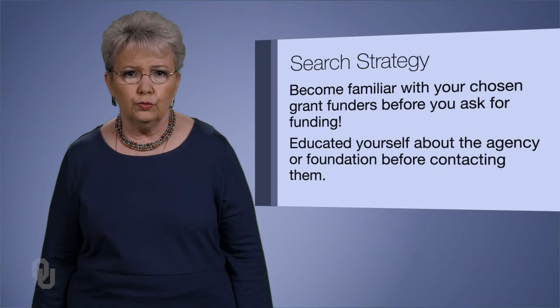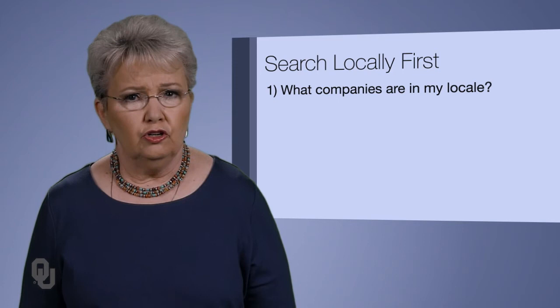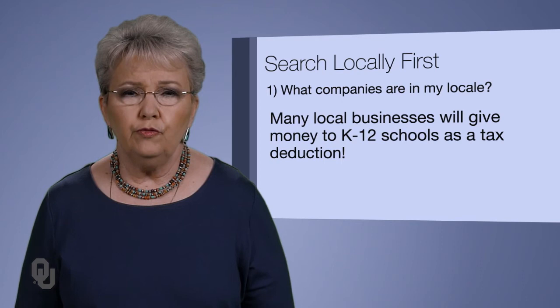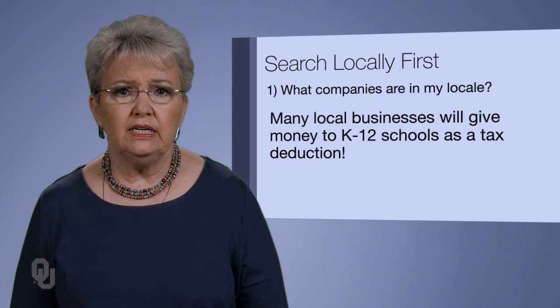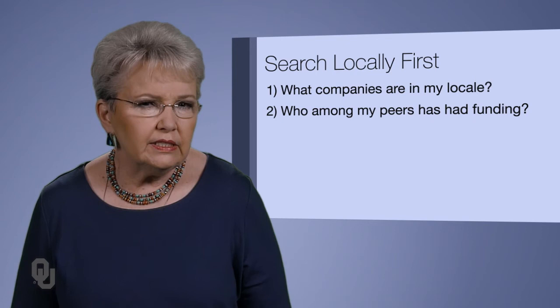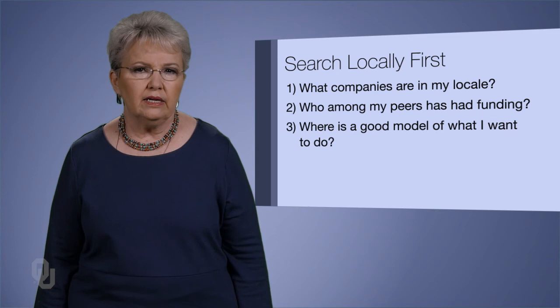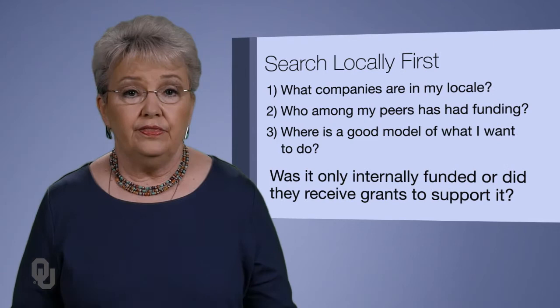You want to be appropriate to meet the needs of your school, not appear ignorant and begging for money. Select local resources in addition to foundations and agencies — look in your own locale, in the phone book or a chamber of commerce list. Many local businesses will give money to K-12 schools as a tax-deductible contribution; they want to help your students be safe, bright, and in high-quality schools. Look around at your peers — who has funding and how did they get it? Look in your professional organizations for a good model of what you want to do, and see who funded that model.